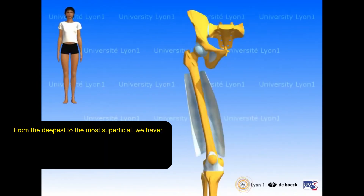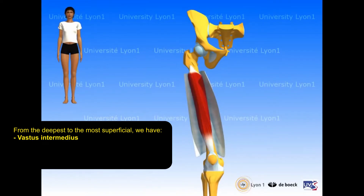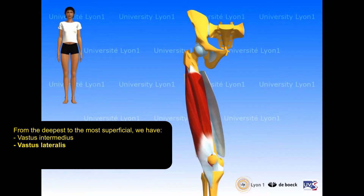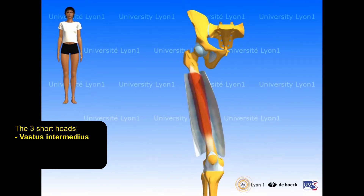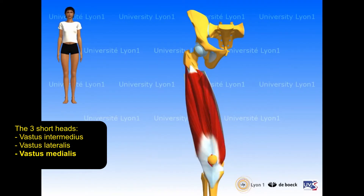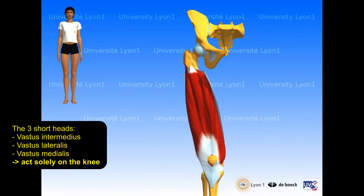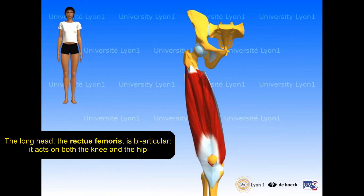From the deepest to the most superficial, we have vastus intermedius, vastus lateralis, vastus medialis, and the rectus femoris. The three short heads — vastus intermedius, vastus lateralis, and vastus medialis — act solely on the knee. The long head, the rectus femoris, is biarticular: it acts on both the knee and the hip.